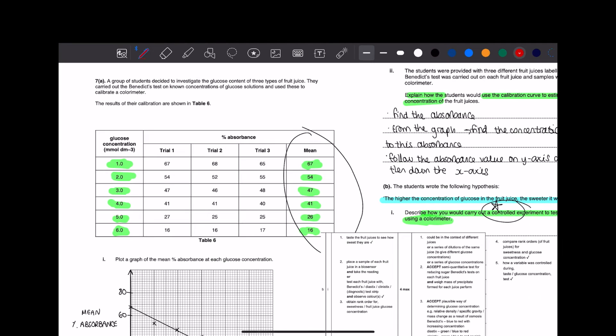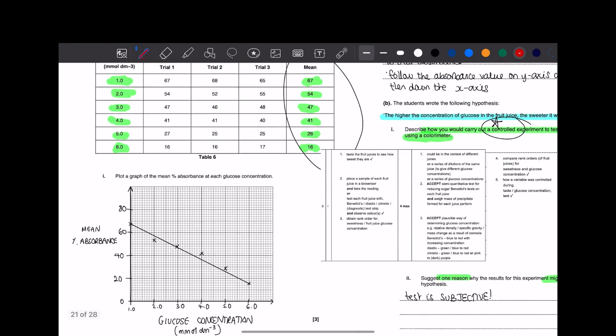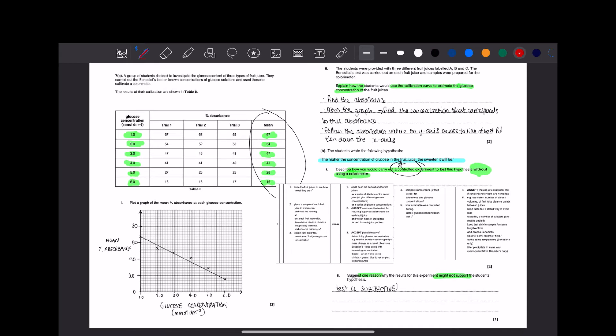Question 7 basically has a table and wants us to draw a graph. When you get graph questions, you need to be accurate, but there's other things you need to think about. You need to occupy as much space as you can with the graph given.